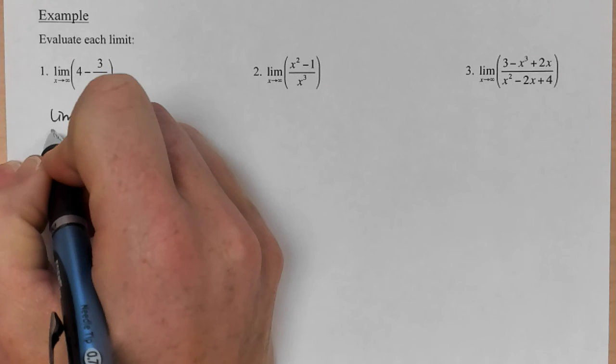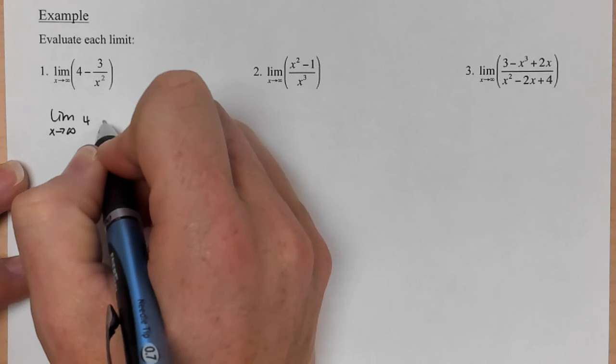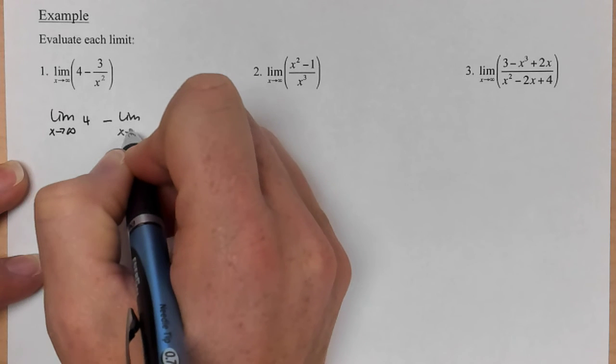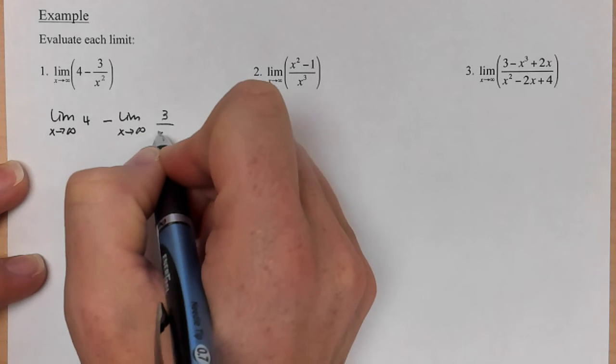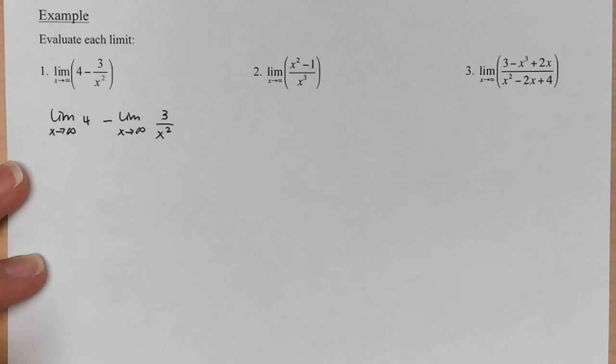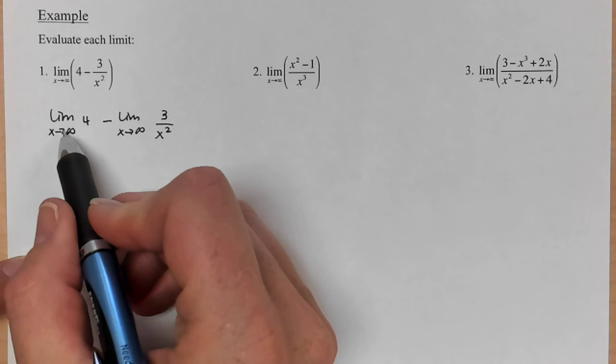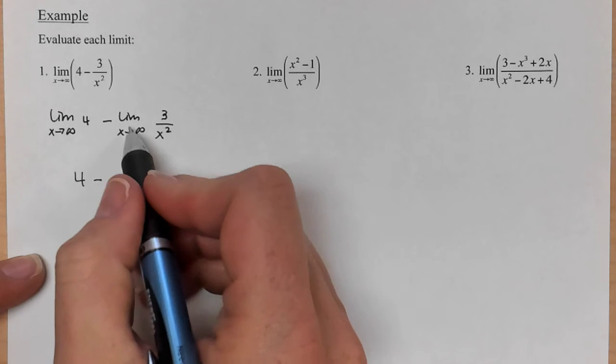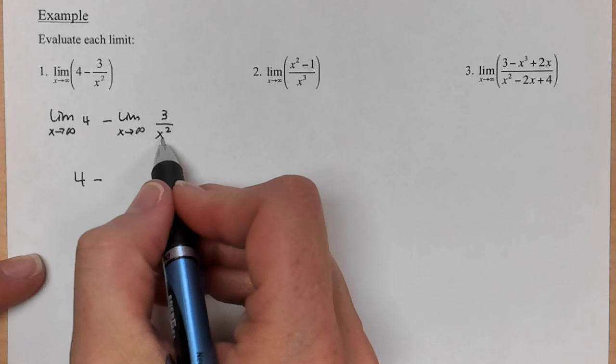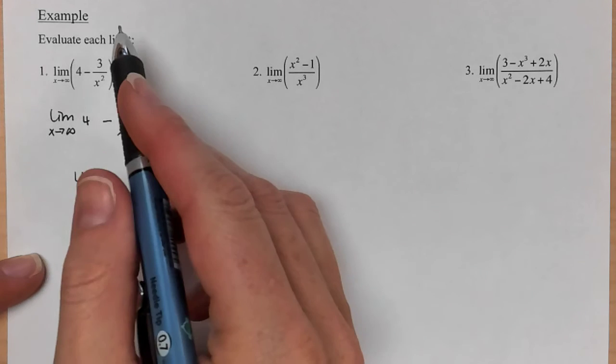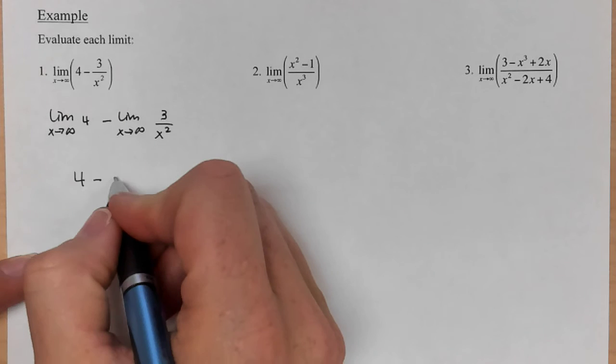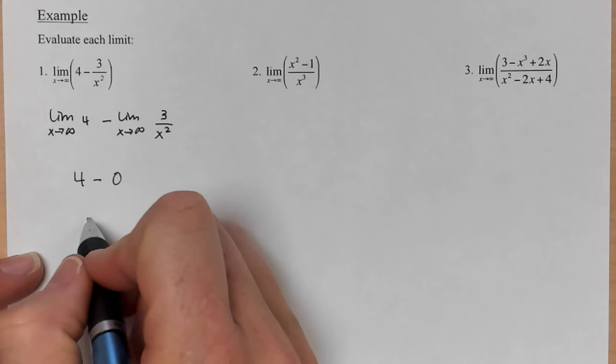This can actually be written as the limit as x approaches infinity of 4, and then minus the limit as x approaches infinity of 3 over x squared. And so we can kind of treat these as two separate problems. This one, there's nothing to plug into, so no matter how big x gets, it doesn't really matter, it's just going to be 4. This one, the highest power is on the bottom, and by what we just learned up above, highest power on the bottom gives us a 0, and so this is 4 minus 0.